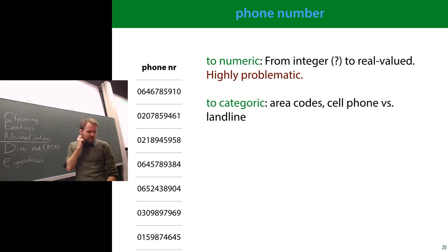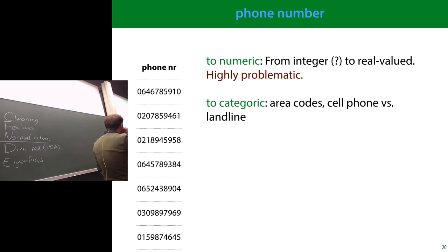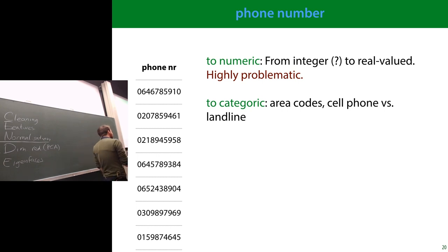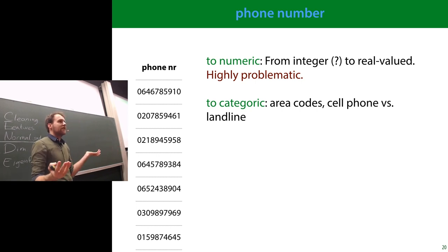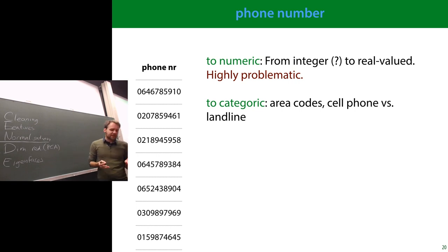Phone numbers are more interesting. At first it looks like a number, but interpreting it numerically is meaningless — a bigger phone number doesn't tell you anything relevant about the person. You're imposing an ordering that's irrelevant. Instead, think about what information is inside the phone number that could be valuable for your task — for instance, the area code, or whether it's a mobile number.